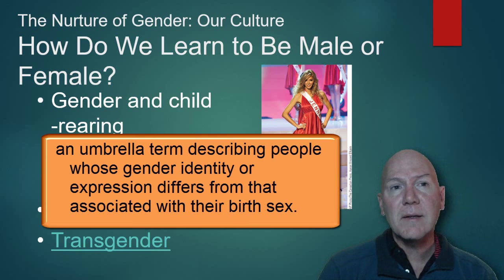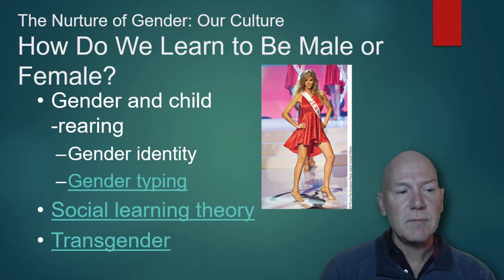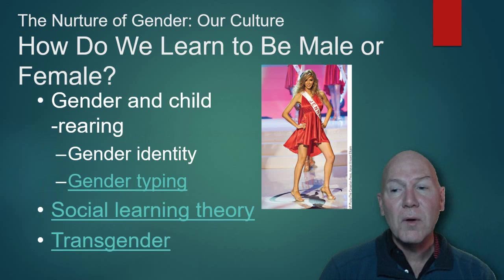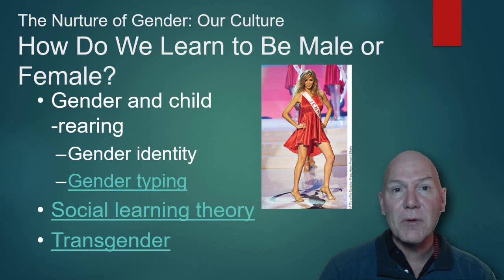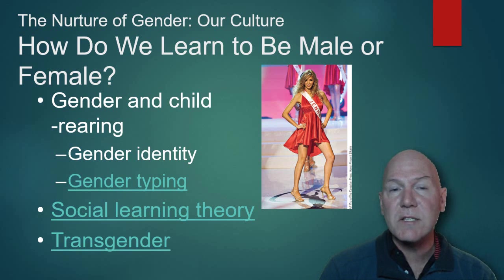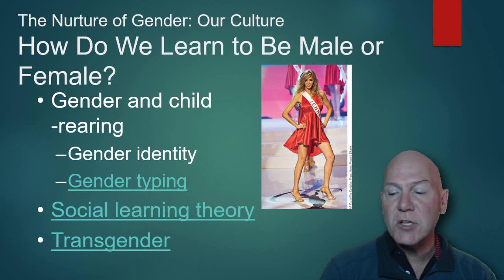Transgender is a term used to encompass all situations where gender identity doesn't match biological sex. This ranges from intersex to cross-dressers — most cross-dressers happen to be male dressing as female, and notably many of them are sexually attracted to women. Sexual orientation is separate from gender identity. Girls can identify as male, females can identify as male and be attracted to females, or attracted to both sexes, or to males. They're separate things with many different combinations.